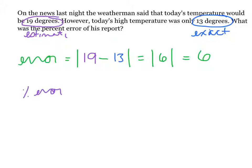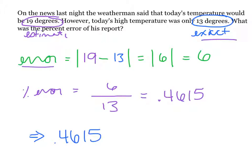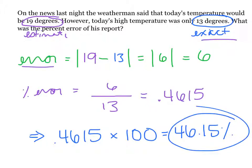6 divided by 13 is .4615. Yet don't forget, we're not done. This is only a decimal. We take .4615, multiply by 100, and that gives us 46.15%. That is our final answer. His weather report was off by 46.15%. He was not very accurate that day.